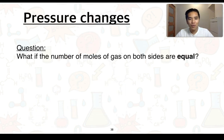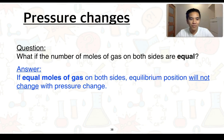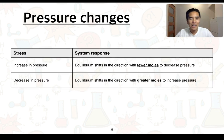A question now: what if the number of moles of gas on both sides were equal? Well in this case, it can't really favour the forward or backward reaction because it's not going to help relieve or increase the pressure depending on what change was applied. So the answer is: if there are equal moles of gas on both sides, the equilibrium position will not actually change with a pressure change because both sides essentially change to the same magnitude. We can summarise this in a table: an increase in pressure will cause the equilibrium to shift in the direction with fewer moles to decrease the pressure, and a decrease in pressure will cause the equilibrium to shift in the direction with greater moles to increase the pressure.